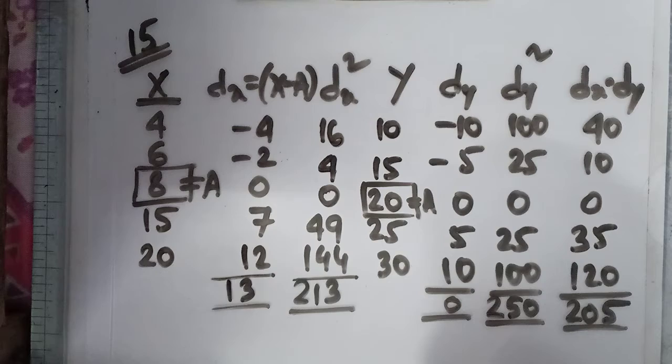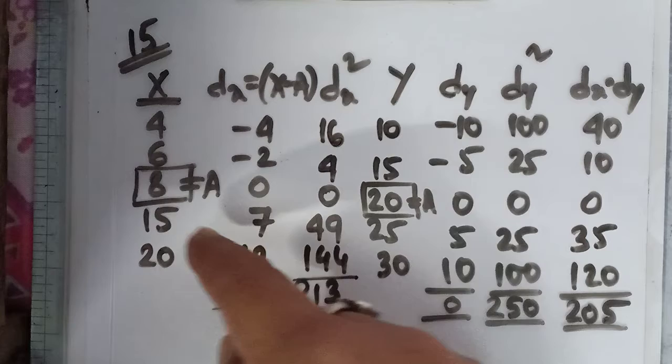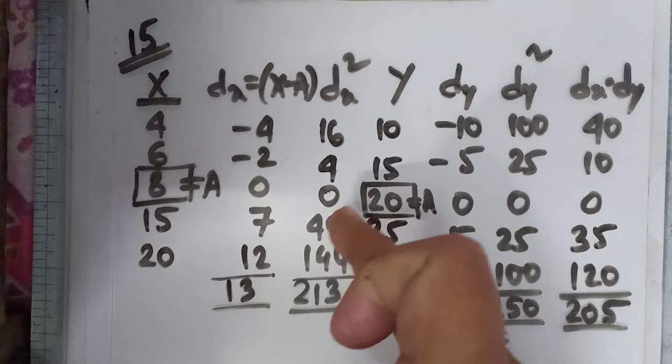In the shortcut method, you have to assume mean, take as 8, and find out the deviations dx: 4 minus 8, 6 minus 8, 8 minus 8, 15 minus 8 and 20 minus 8. Then dx square: 4 square, 2 square, 7 square and 12 square.